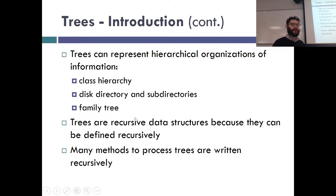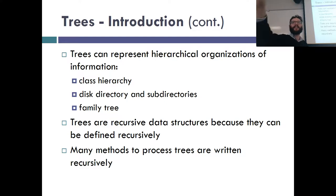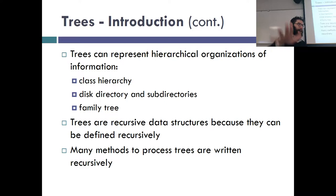Tree nodes can have multiple successors but only one predecessor. We deal with trees a lot — for example, class hierarchies. We have the Object class and Collections class, then all the different types of collections like lists and sets, and then under lists we have ArrayList and LinkedList. That kind of hierarchy is modeled using a tree. Your disk directory and subdirectories are also modeled by a tree.